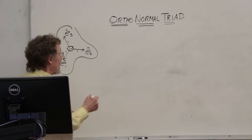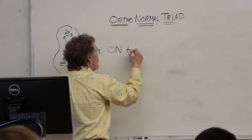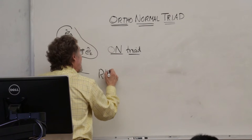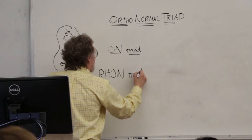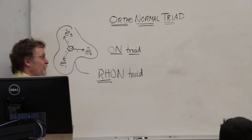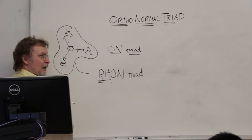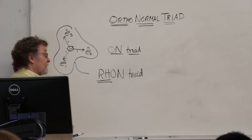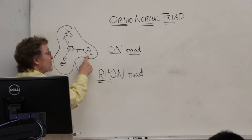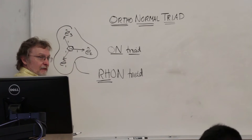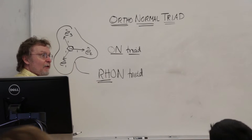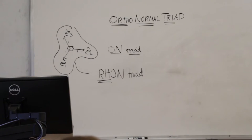The shorthand I'm going to use is just capital ON triad — ortho-normal triad. That triad might get another modifier: RHON. R-H stands for right-handed. What would make an ortho-normal triad right-handed as opposed to left-handed? It comes through the cross product relationship. You have a right-handed ortho-normal triad when one cross two gives you three. If one cross two gives you minus three, it's a left-handed triad. So a triad has handedness, left or right, depending on how the cross product works.